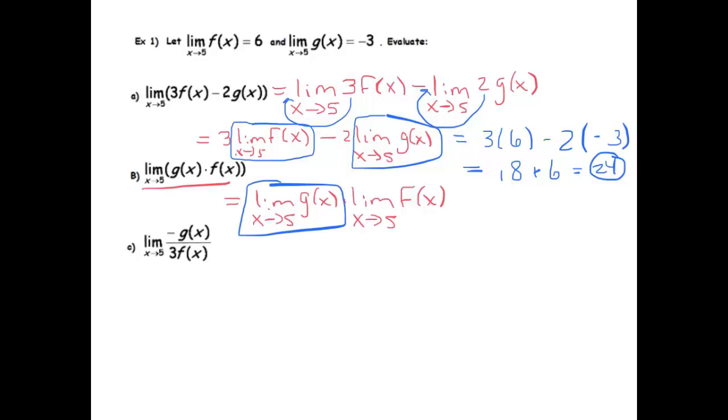But now we know what this value is, right? That's negative 3. And we know that this is a 6. So we have negative 3 times 6, which is negative 18.